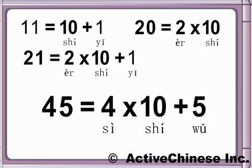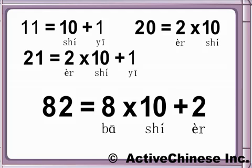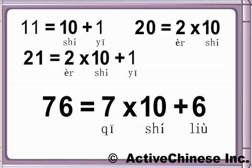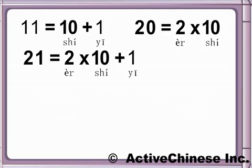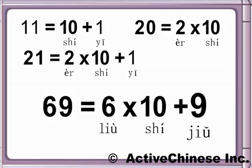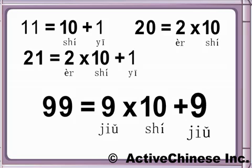Sì-shí-wǔ. Bā-shí-èr. Sì-shí-liù. Liù-shí-jiǔ. Jiǔ-shí-jiǔ.